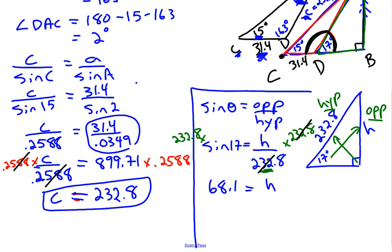Meaning that the height of the tree should be 68.1. We were asked to solve a problem. We should answer that problem and that problem can be answered in a statement. So therefore the tree is 68.1 feet tall. Remember we were asked to go to the nearest tenth and so there we have it.